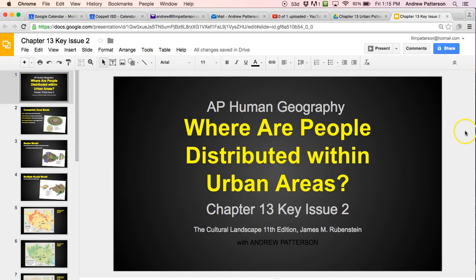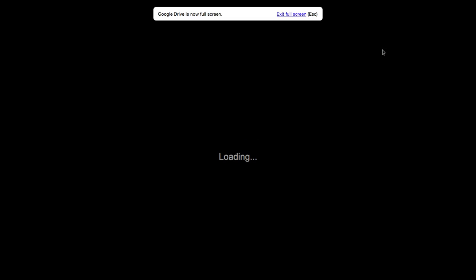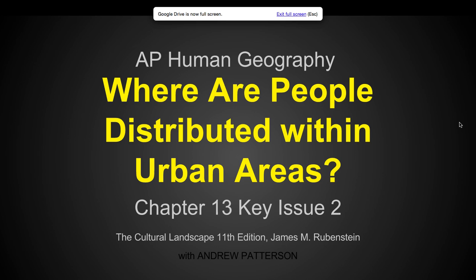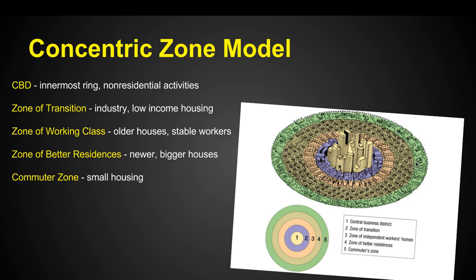Let's take a look at Rubenstein chapter 13, key issue 2. We're going to discuss where people are distributed within urban areas. We've got these urban areas, these cities — where are people going to be? To do this, we're going to look at a few different models.